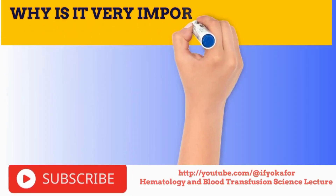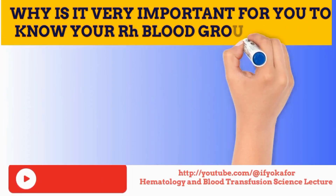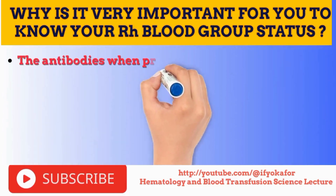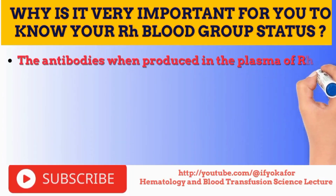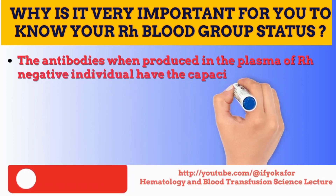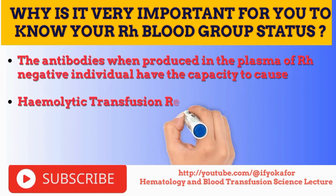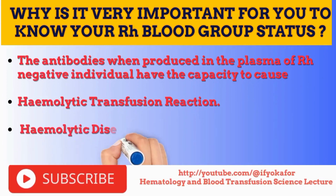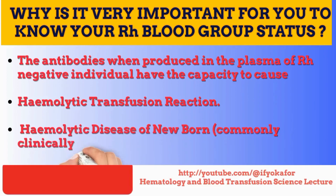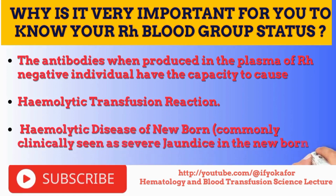Why is it very important for you to know your ROH blood group status? The antibodies, when produced in the plasma of ROH negative individuals, have the capacity to cause: 1. Hemolytic transfusion reaction; 2. Hemolytic disease of the newborn, commonly clinically seen as severe jaundice in the newborn.